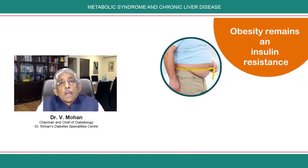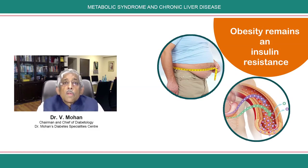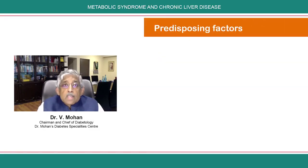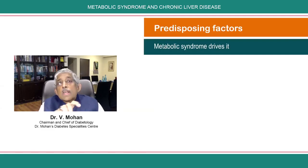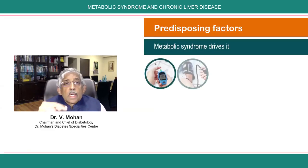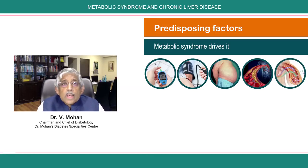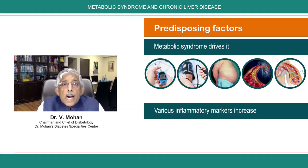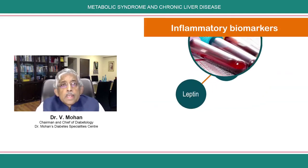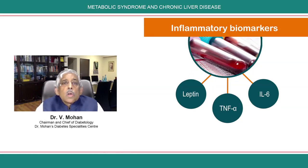We do know that obesity and insulin resistance remain among the most important predisposing factors, and metabolic syndrome drives this progression. If you have metabolic syndrome — diabetes, hypertension, obesity, central obesity, insulin resistance — you tend to progress. The mechanism is believed to involve various inflammatory markers that increase with central obesity, such as leptin, TNF-alpha, and IL-6, all of which are elevated in people with metabolic syndrome and non-alcoholic fatty liver disease.